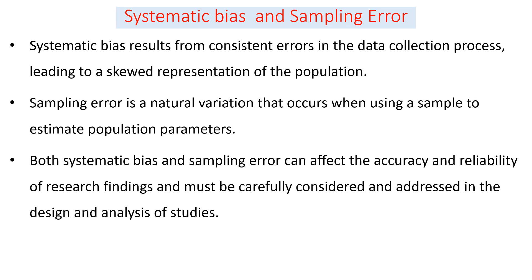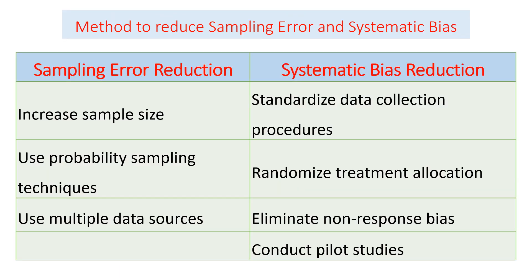Both systematic bias and sampling error affect the accuracy and reliability of research findings and must be carefully addressed in study design and analysis. Methods to reduce sampling error include: increasing the sample size — as sample size increases, sampling error reduces; conducting a census eliminates sampling error entirely; using randomization or probability sampling to give each sampling unit an equal chance of selection; and using multiple data sources for a single study.